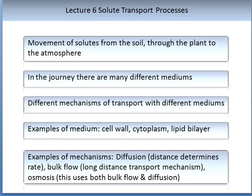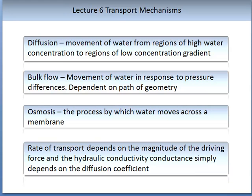Diffusion is defined as the movement of water from regions of high water concentration to regions of low water concentration. For more details, refer to Lecture 2 where this concept was first introduced. Bulk flow is defined as the movement of water in response to pressure differences, and is dependent on the path geometry. Osmosis is defined as the process by which water moves across a membrane, and involves both diffusion and bulk flow.